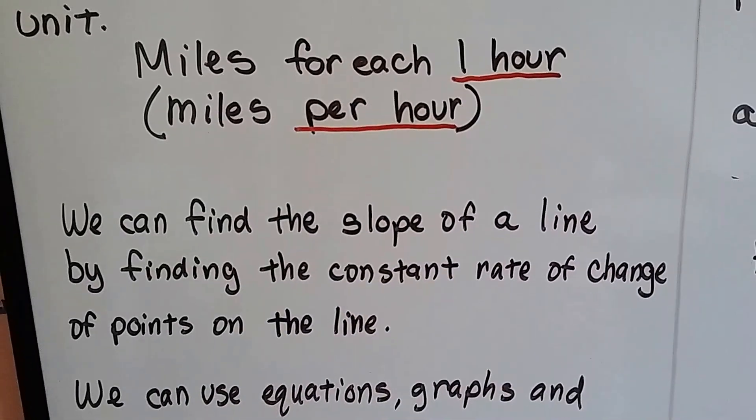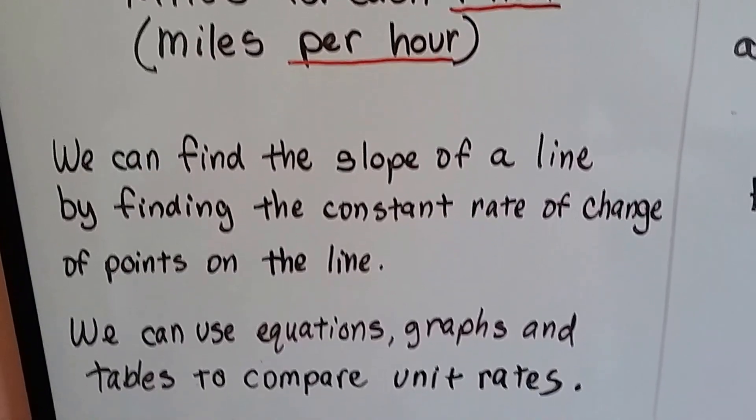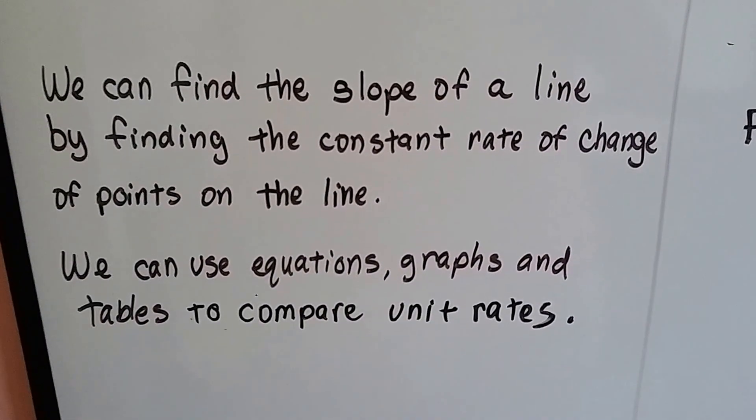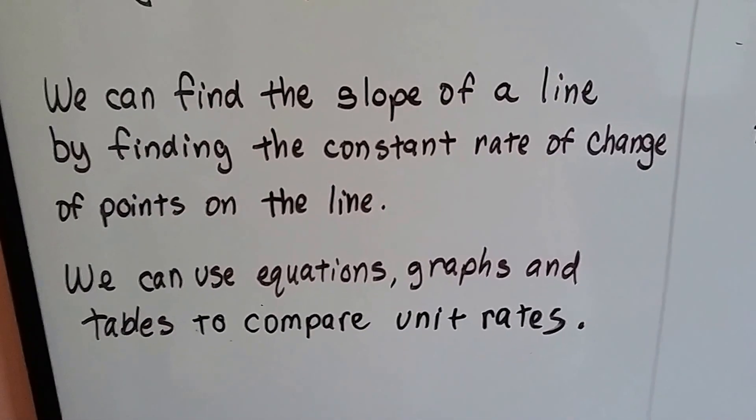We can find the slope of a line by finding the constant rate of change of points on a line. We can use equations, graphs, and tables to compare unit rates.